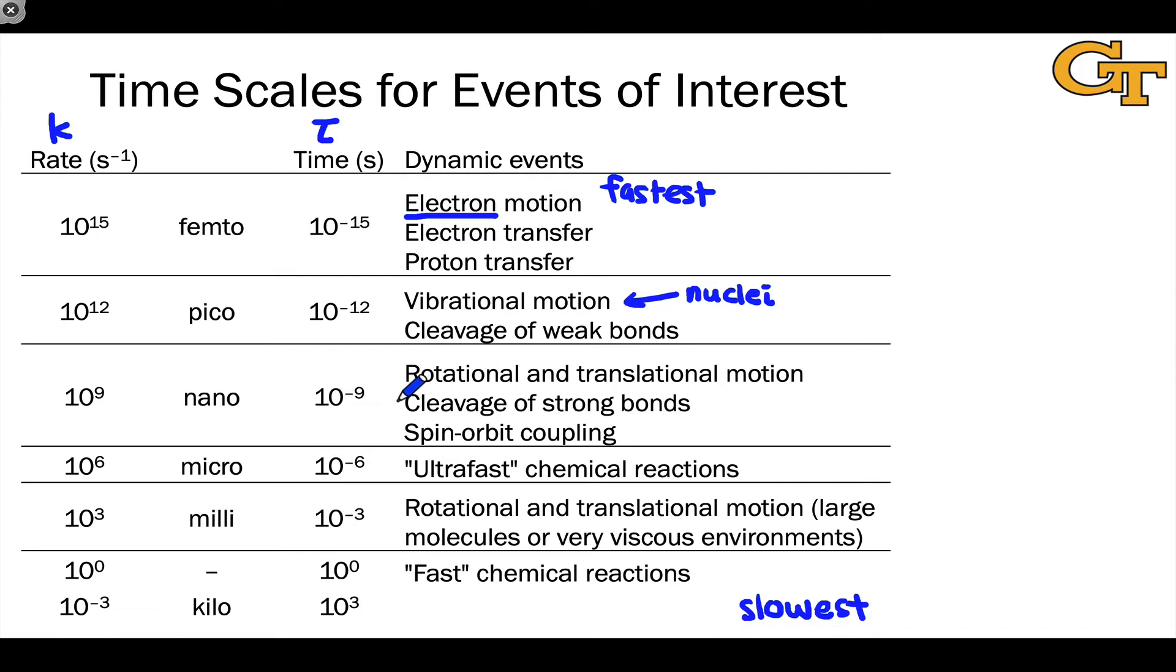Nanoseconds, you're talking about rotational and translational motion, the cleavage of relatively strong bonds, and what we'll call spin-orbit coupling, mechanisms that transfer electronic orbital motion to the inversion of an electron spin. That takes on the order of nanoseconds, generally.